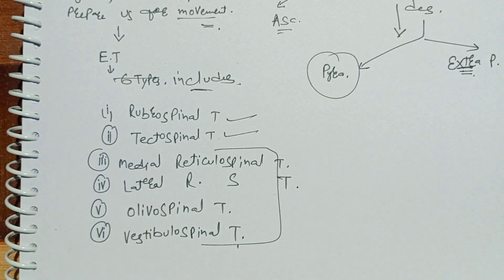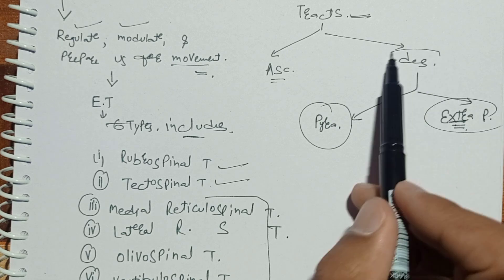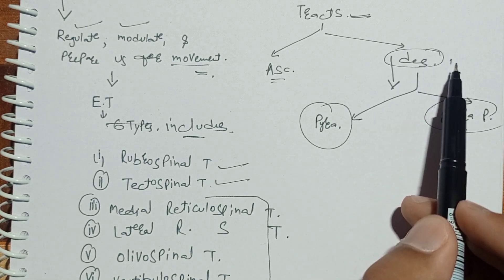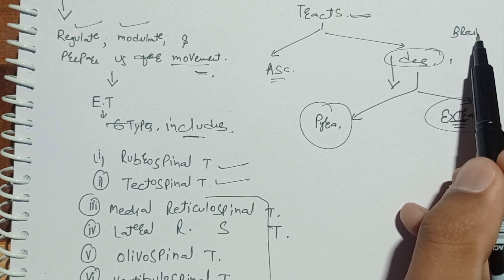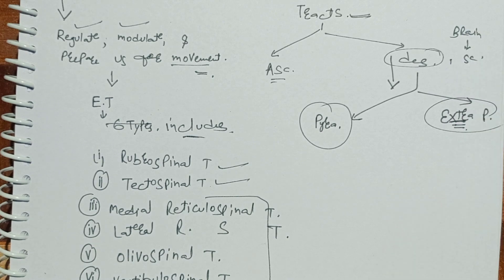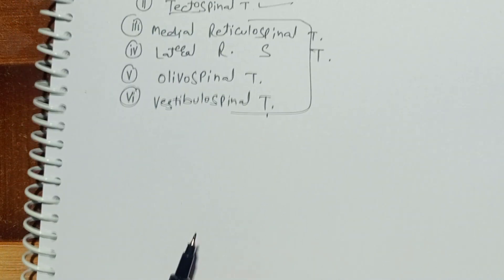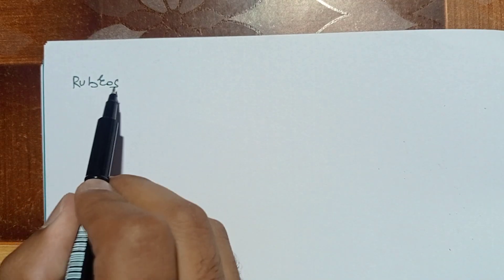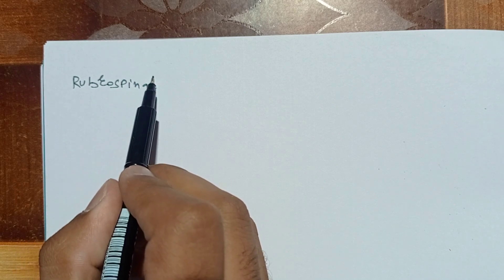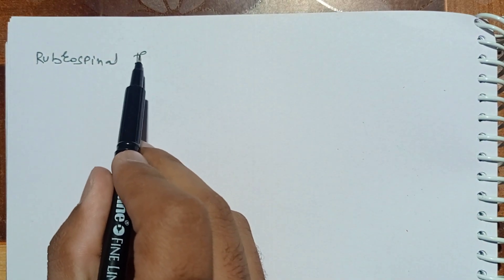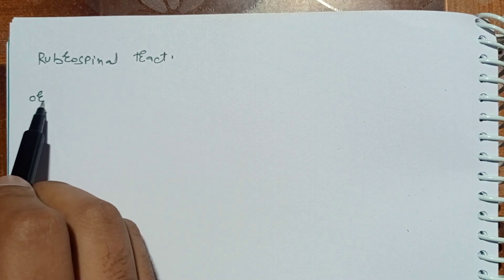All six of these are extrapyramidal tracts, which are descending tracts — meaning they start in the brain and go towards the spinal cord. Let's begin with the first two: rubrospinal tract and tectospinal tract. Our first tract is the rubrospinal tract.